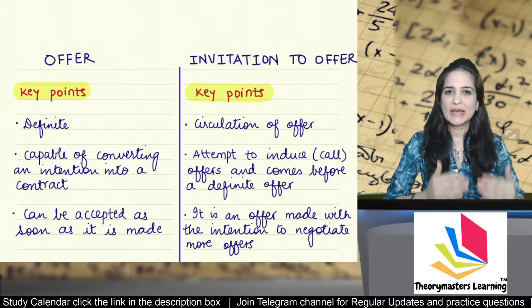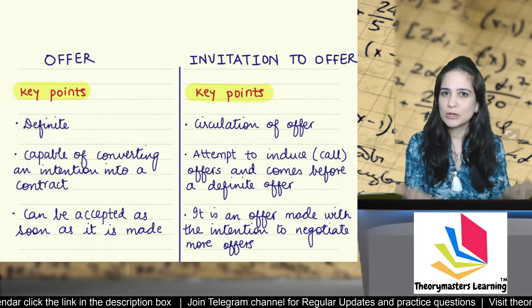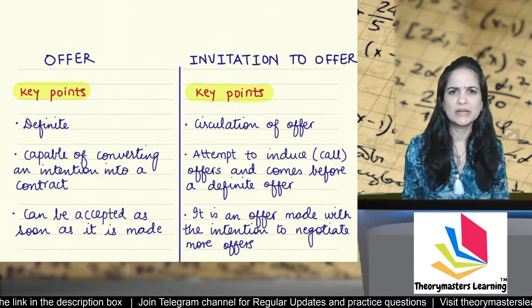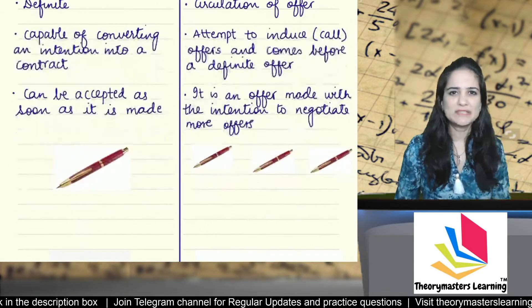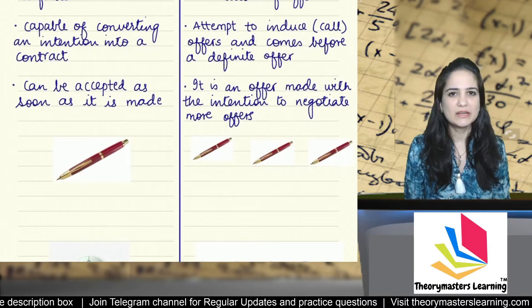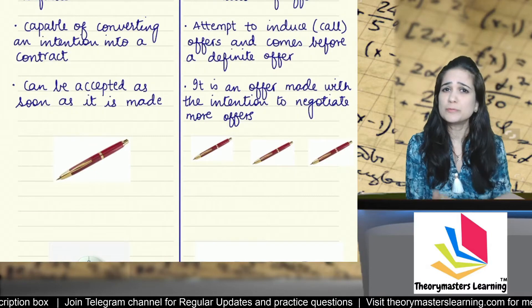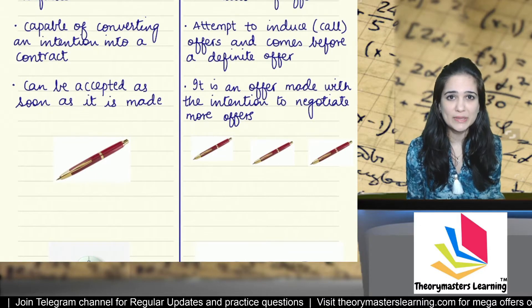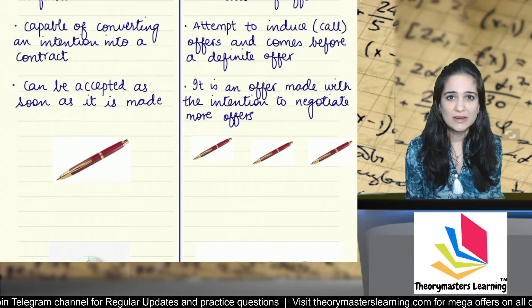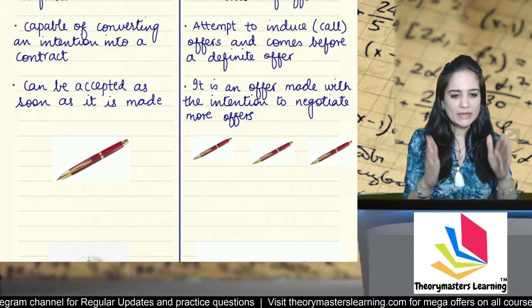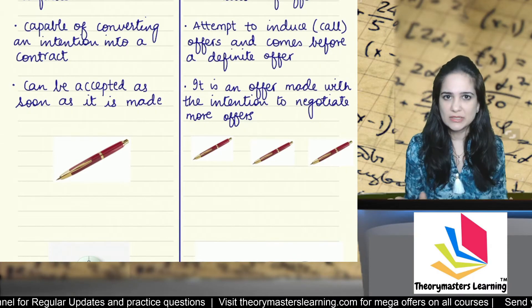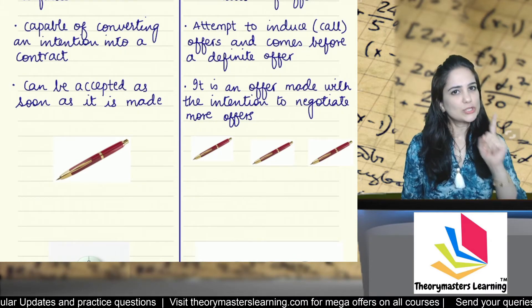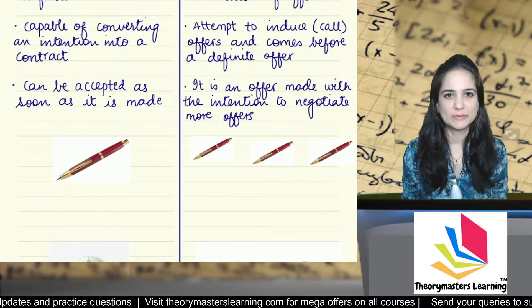An offer can be either accepted or rejected immediately. For example, I ask you: do you want to buy this pen for 100 rupees? You can either accept or reject this offer immediately. So this is an offer.